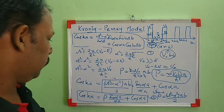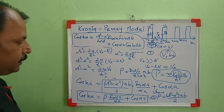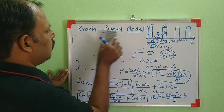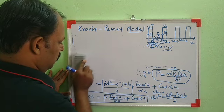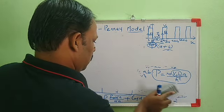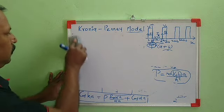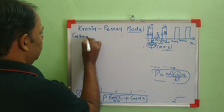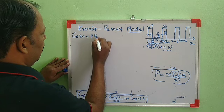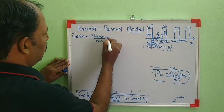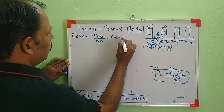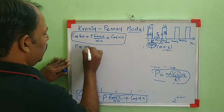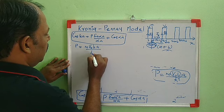In the last section we obtained the solution as cos(ka) = P·sin(αa)/αa + cos(αa), where P is given by P = mV₀ba / ℏ². Now we will find the value of P for two extreme cases.